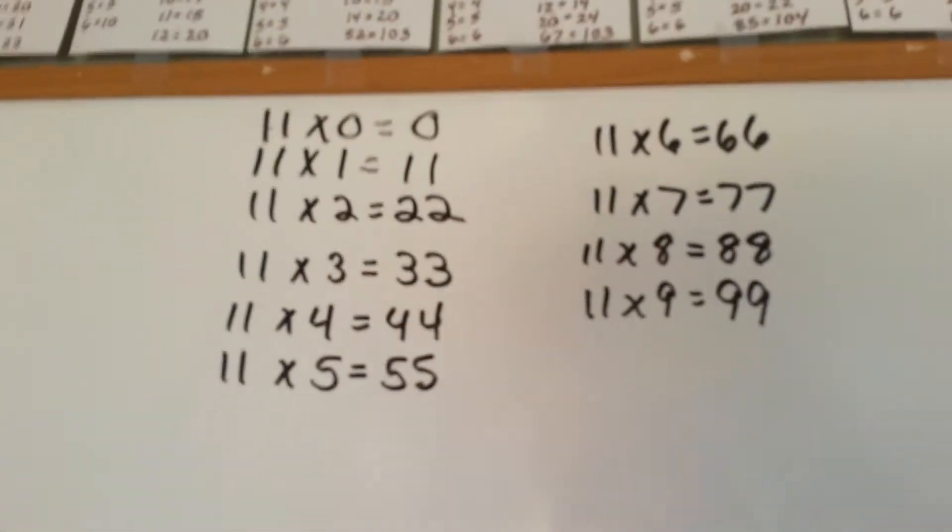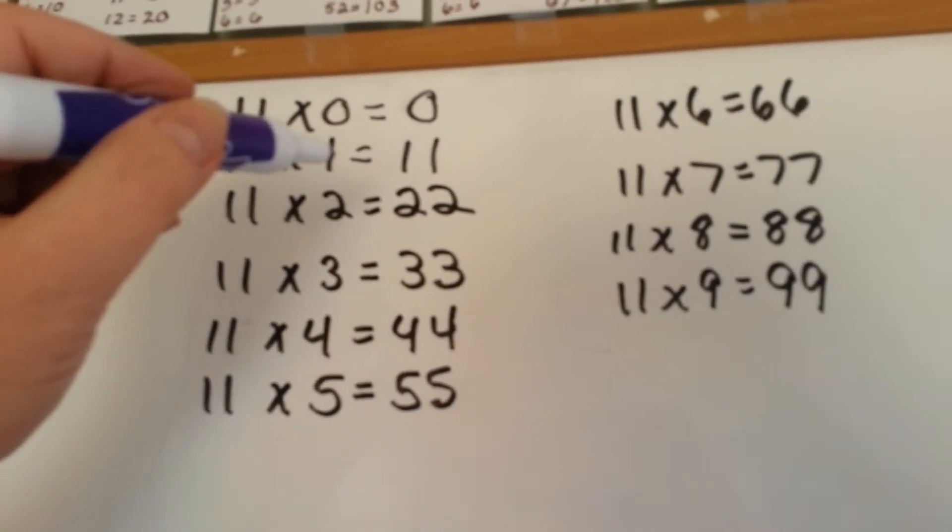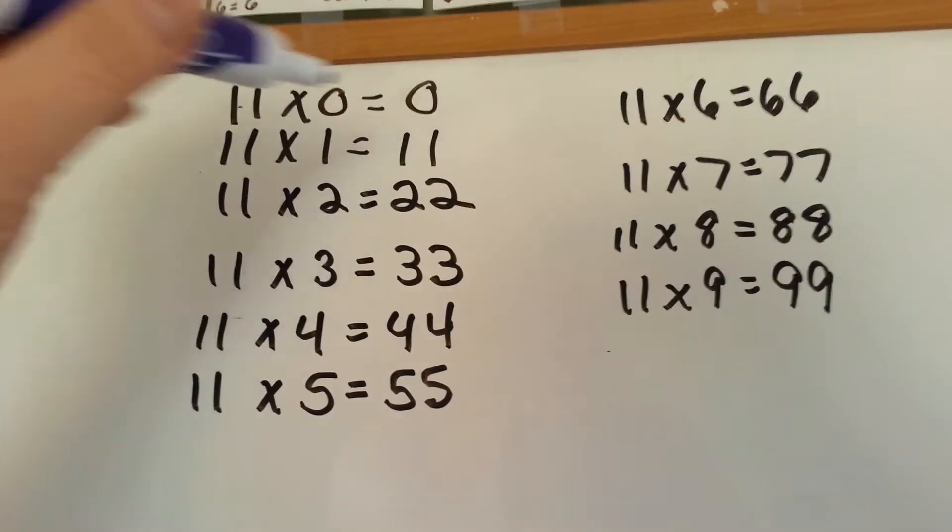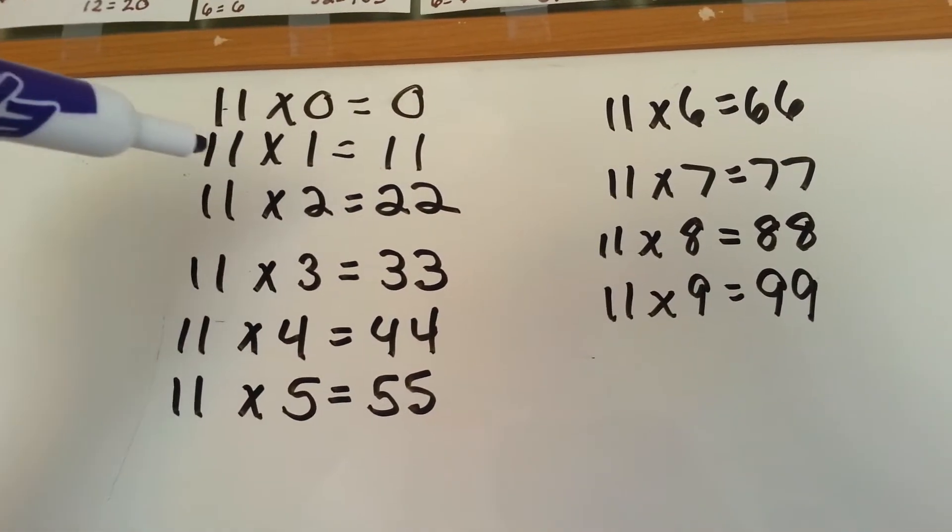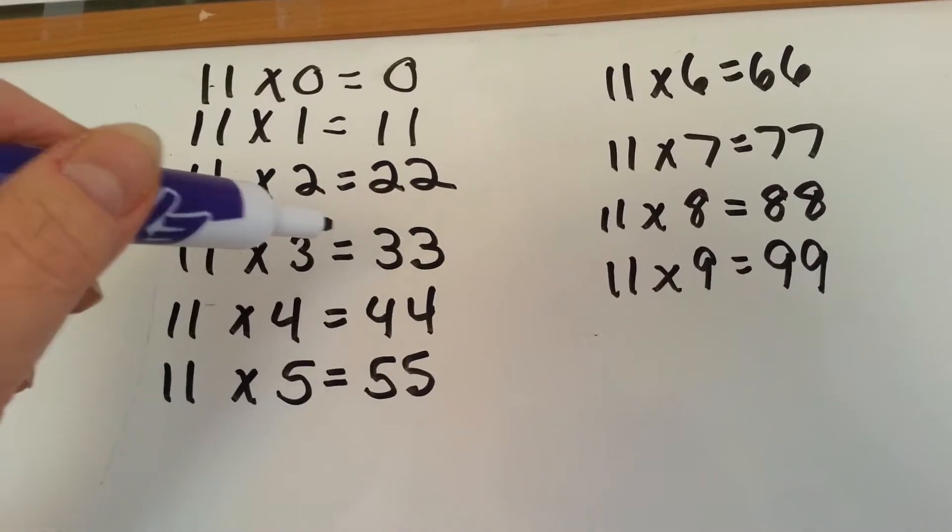When you multiply 11, it is very easy to do, because whatever number, except 0, of course, because anything you multiply by 0 is going to be 0. But whatever number you're multiplying by 11, you just double it.